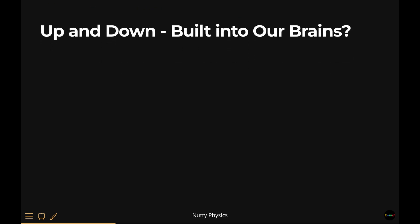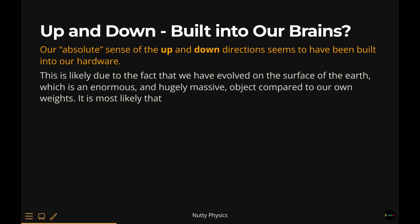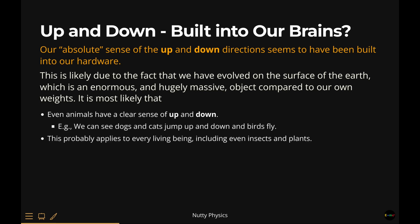Up and down, built into our brains? Next, let's consider our sense of up and down. We have this absolute sense of the vertical directions, up and down, which is probably built into our biology. This is likely due to the fact that we have evolved on the surface of the earth, which is an enormous and hugely massive object compared to our own weights. In fact, even animals must have a clear sense of up and down. For example, we see dogs and cats jump up and down and birds fly, and we have no doubt that they also know the vertical up and down, or high and low. This probably applies to every living being, including even insects and plants. In any case, does this mean that up and down is absolute?